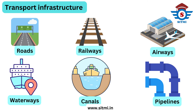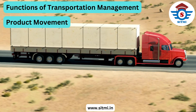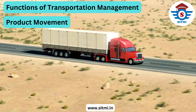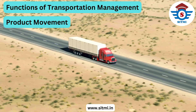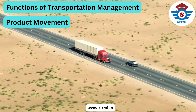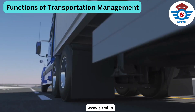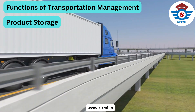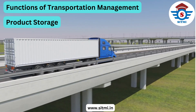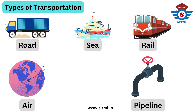Now let's talk about the key functions of transportation management. There are two key functions. The first is product movement, where the transportation process allows the movement of raw material, semi-finished items, finished goods, packaging material, or even rejected material from one location to another. The second key function is product storage, where transportation provides temporary storage in stationary vehicles or vehicles kept moving on a defined route.